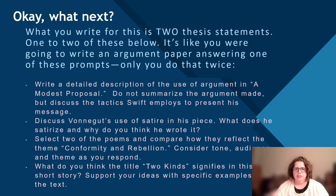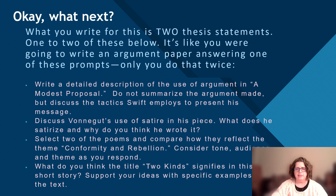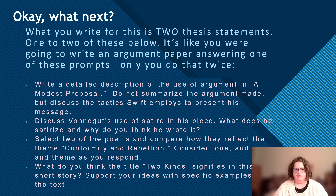Write a detailed description of the use of argument in 'A Modest Proposal' — do not summarize the argument made, but discuss the tactics Swift employs to present his message. Or, separate: discuss Vonnegut's use of satire in his piece — what does he satirize and why do you think he wrote it? Or, separate: select two of the poems and compare how they reflect the theme of conformity and rebellion — consider tone, audience, and theme as you respond. And separate: what do you think the title 'Two Kinds' signifies in this short story? Support your ideas with specific examples in the text.